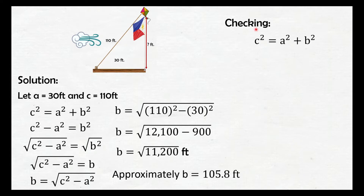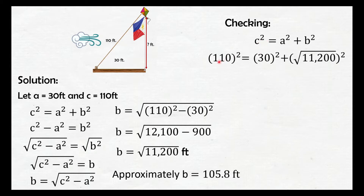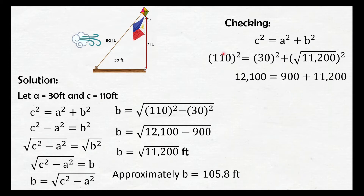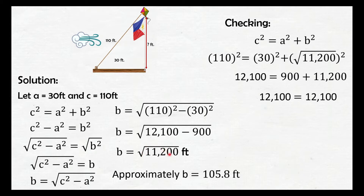Checking using the Pythagorean theorem: C = 110, A = 30, B = √11,200. Substituting: 110² = 12,100, 30² = 900, and (√11,200)² = 11,200. Adding: 900 + 11,200 = 12,100. So they are equal. Again, the height of the kite from the ground is √11,200 feet, or approximately 105.8 feet.